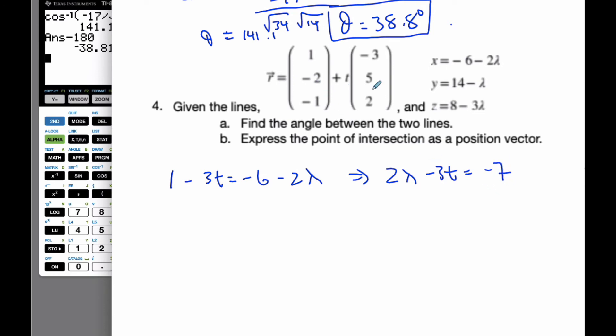And for the next line, I get negative 2 plus 5t is equal to 14 minus lambda. So again, I get lambda plus 5t is equal to 16.